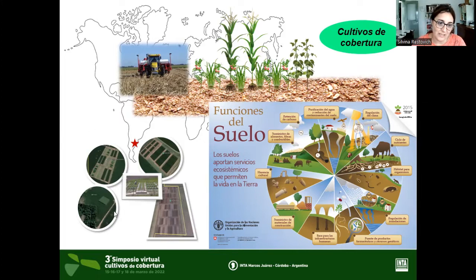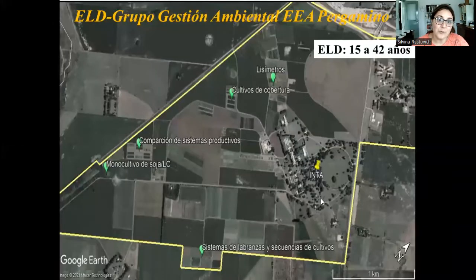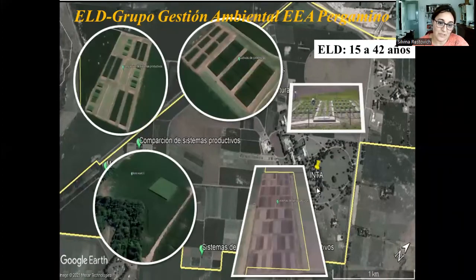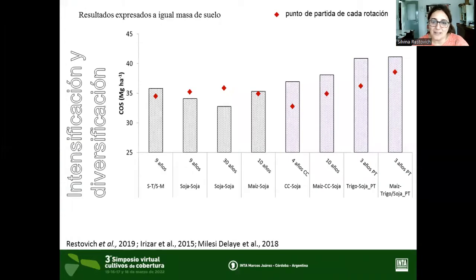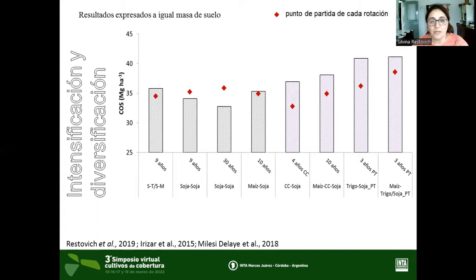Analizar durante un tiempo prolongado el uso de cultivos de cobertura es crucial para poder aportar al diseño de los sistemas productivos. Por eso, contar con ensayos de largo plazo es muy importante, y además porque estos ensayos pueden ser articulados con modelos de simulación. En el grupo de gestión ambiental de INTA Pergamino tenemos varios ensayos de largo plazo, que van entre los 15 y 40 años, con distintos manejos y secuencias. Voy a comenzar mostrando algunos resultados sobre el carbono orgánico del suelo para distintas secuencias de cultivo: los puntos rojos representan el carbono de partida y la barra el carbono medido a 20 centímetros luego de determinada cantidad de tiempo.